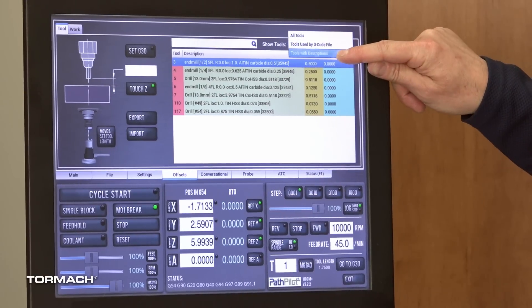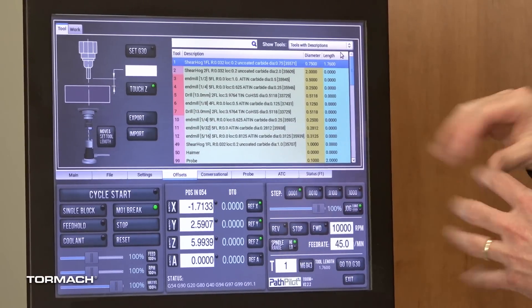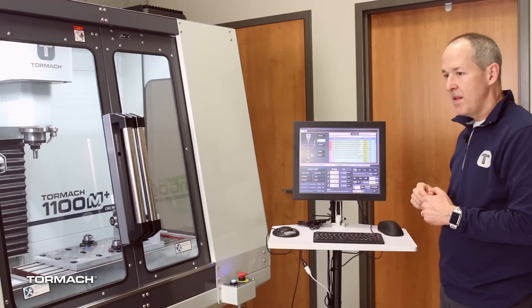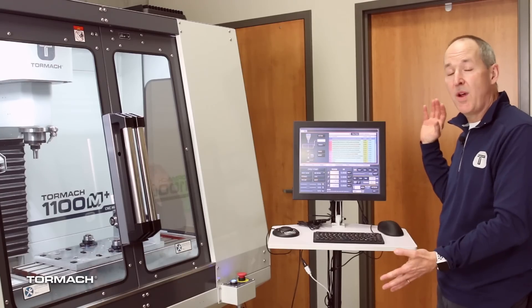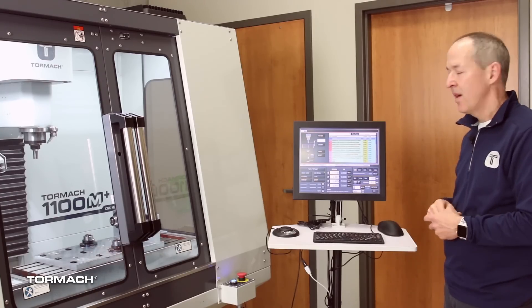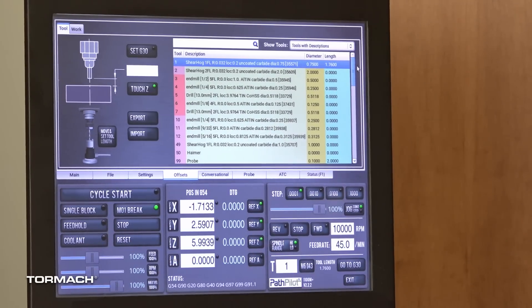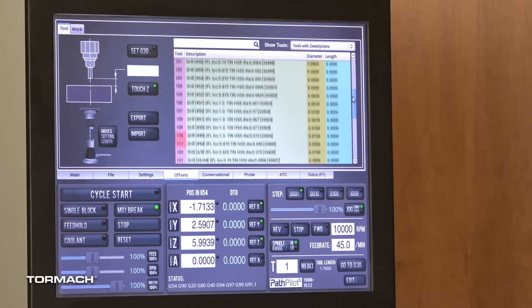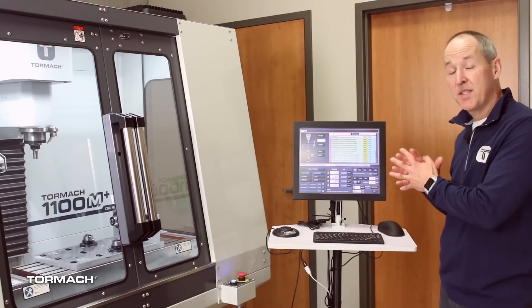You can also filter it with tools with descriptions. So the blank rows that you haven't filled in and done anything with, we basically remove all of those. And it lets you focus on just the tools and the tool numbers that you actually want to be able to see.